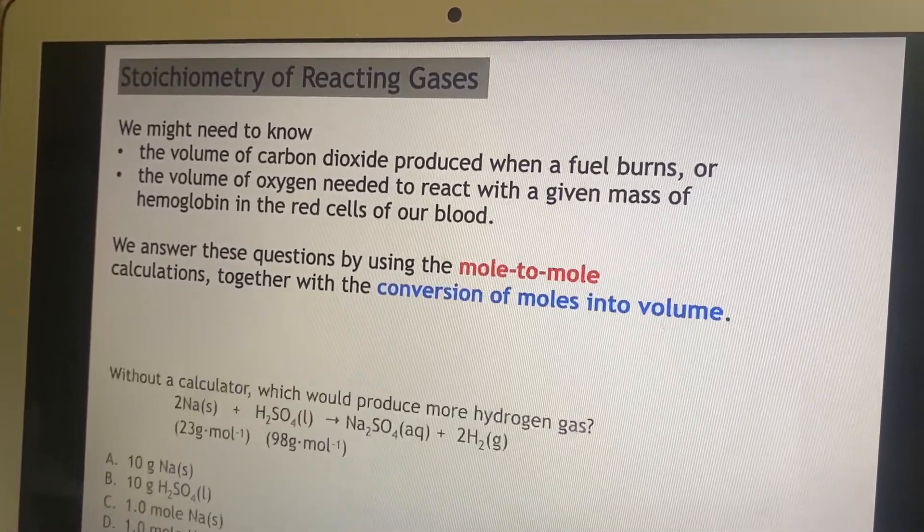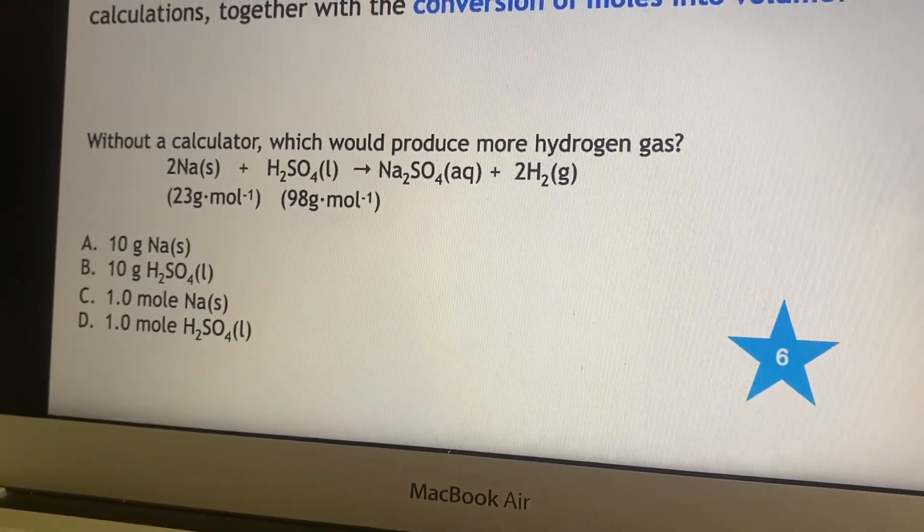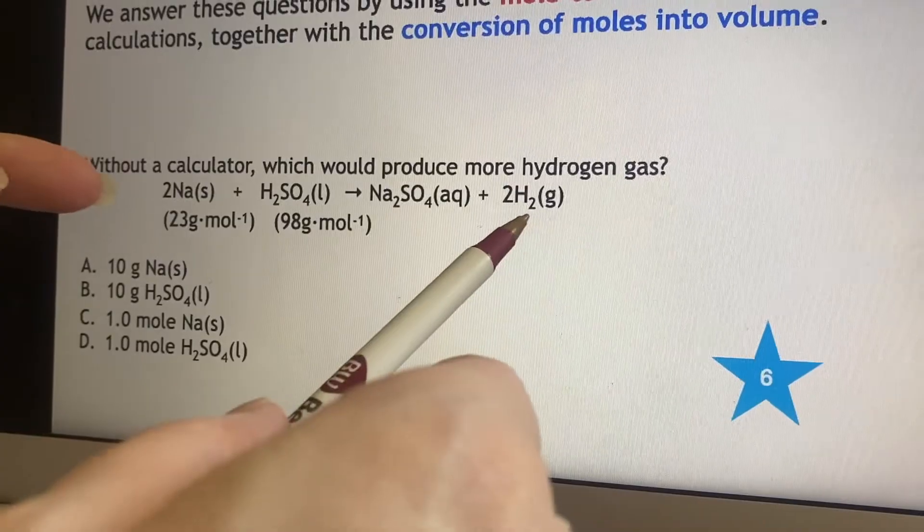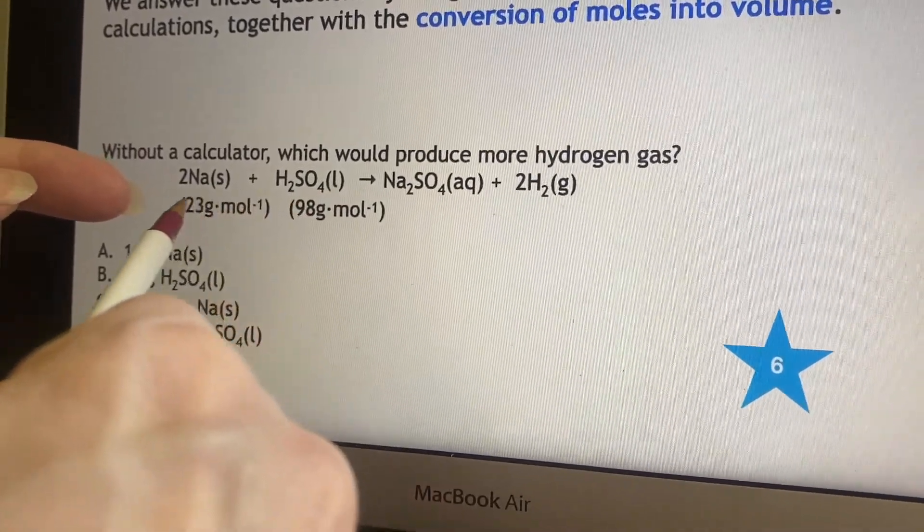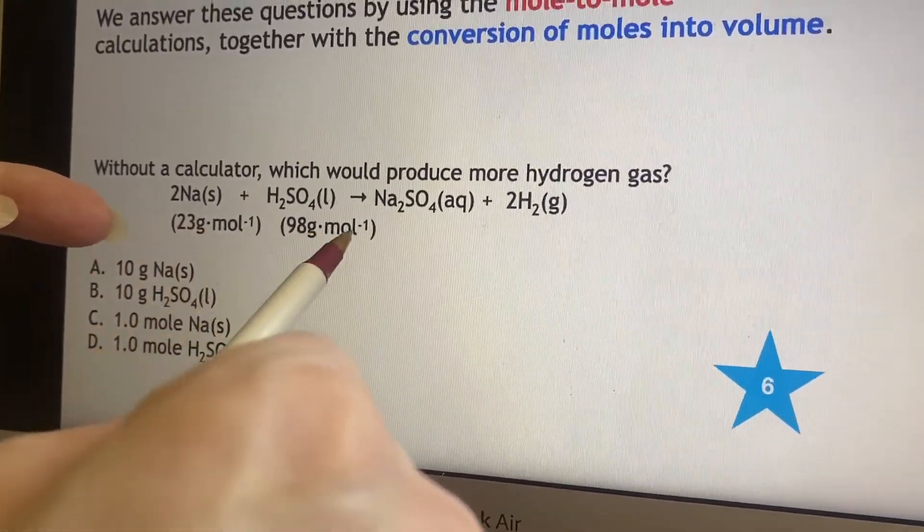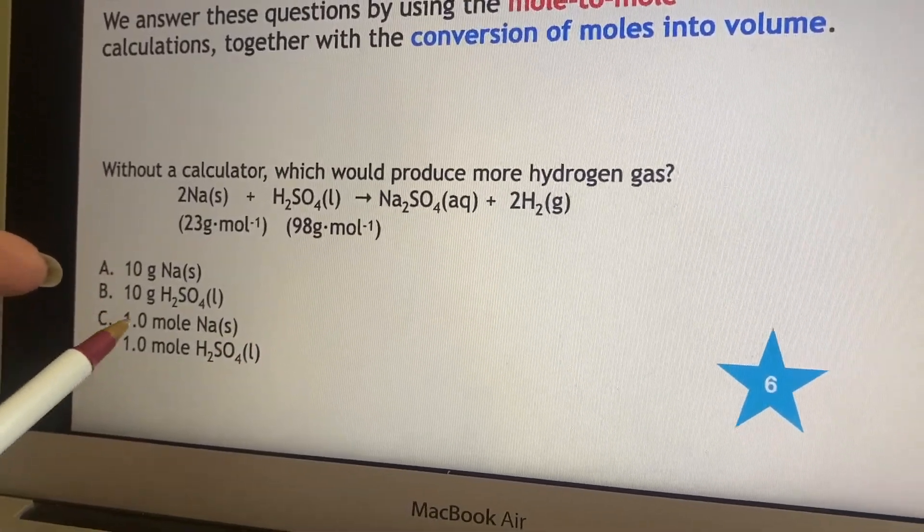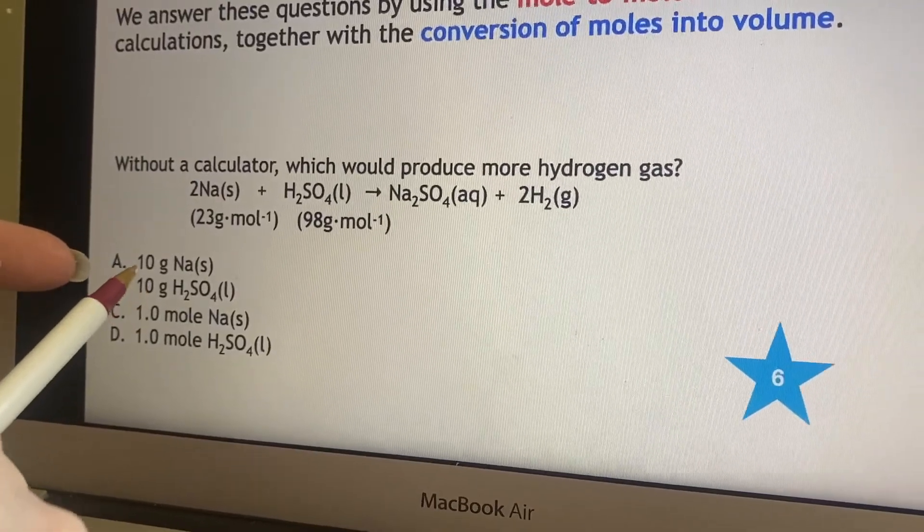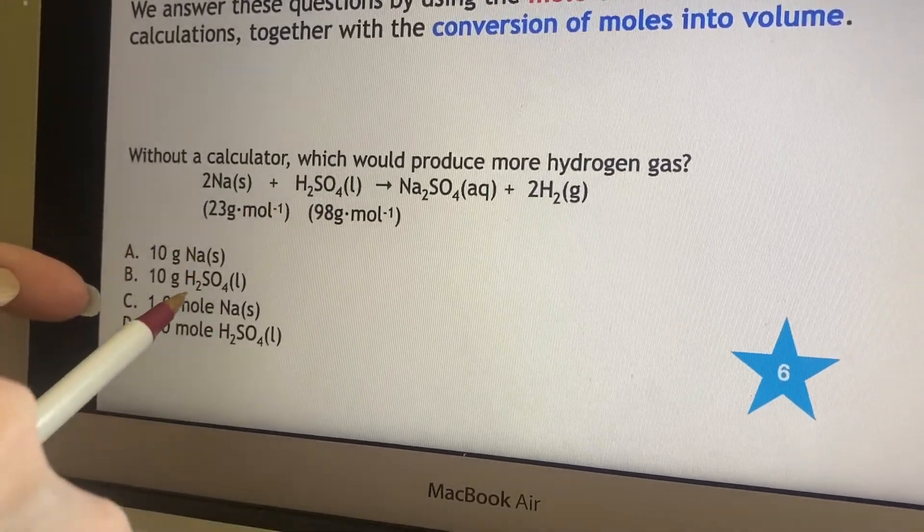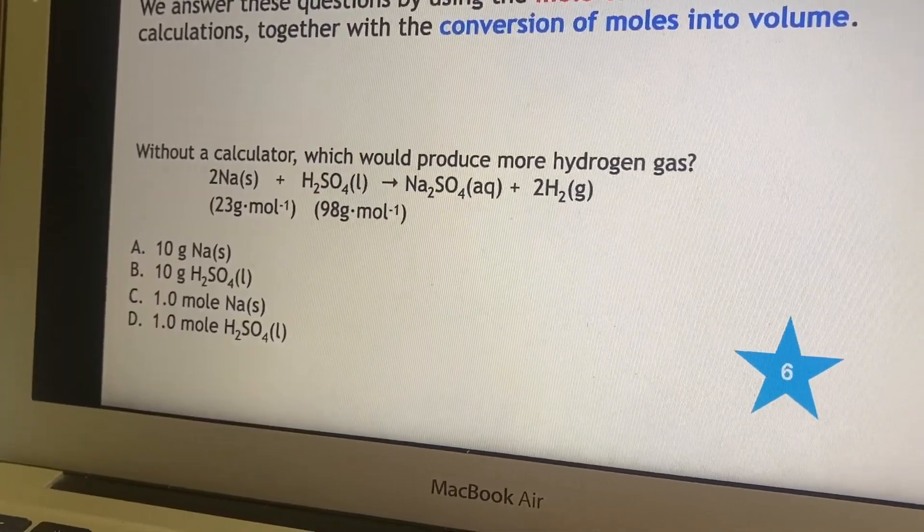Needless to say, here's a nice little puzzle. Without a calculator, which would produce more hydrogen gas? Let's examine this closely to see what we've got for a formula. There's the hydrogen gas, and they're giving me some molar masses, grams per mole for each of these. So that must have something to do with what's going on. What are they offering me? I need to look at this and say, they're offering me 10 grams of sodium or 10 grams of sulfuric acid, or a mole of sodium, or a mole of the sulfuric acid.